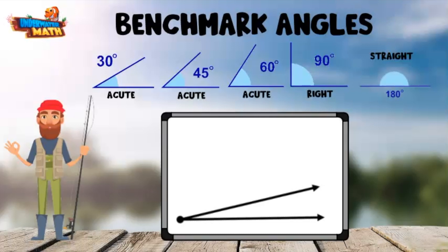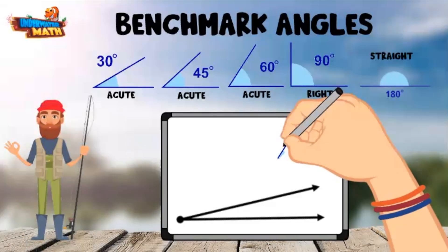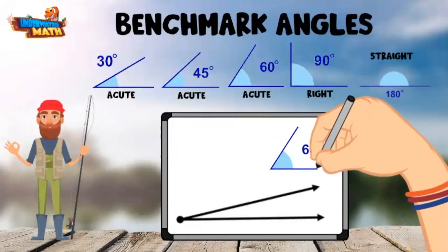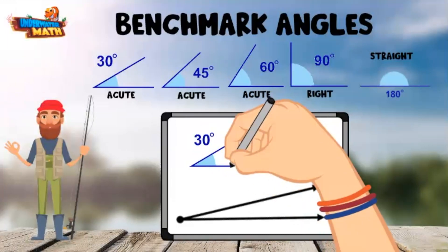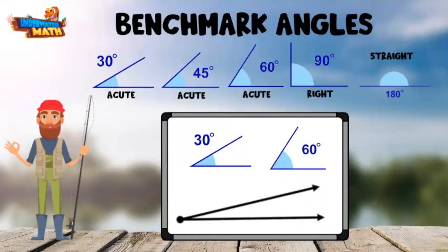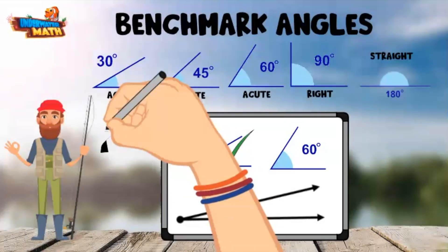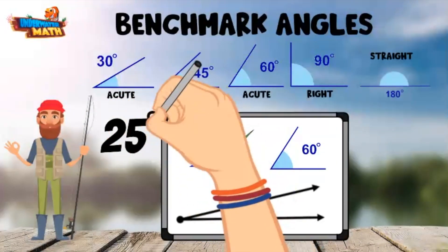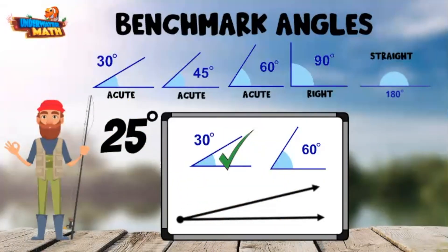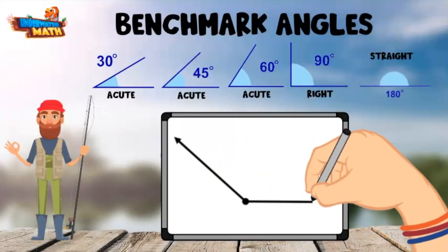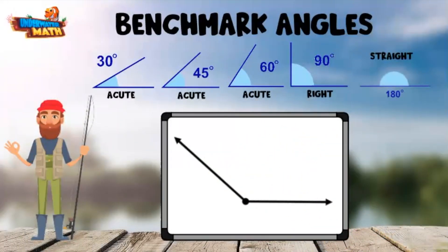Here is our first angle. Right away I can tell it is an acute angle — it is smaller than a right angle. Let's compare to our 60 degree benchmark and our 30 degree benchmark. It looks more like a 30 degree angle and might even be a little smaller. I'd say this angle is about 25 degrees.